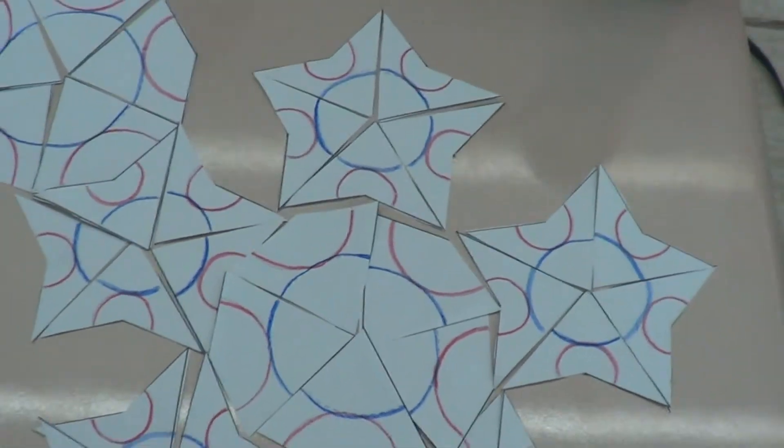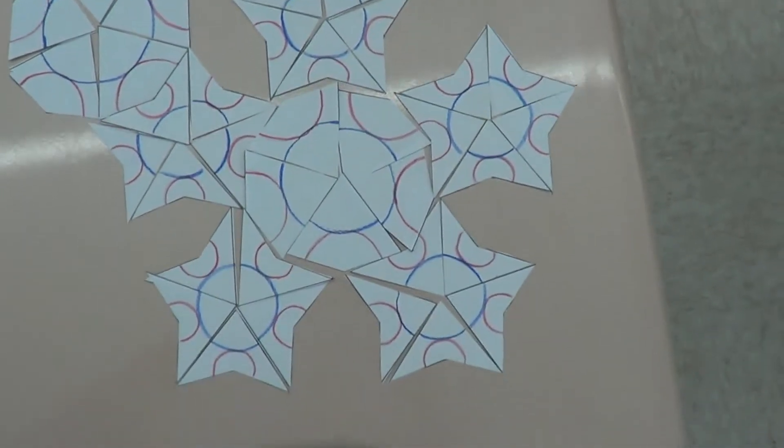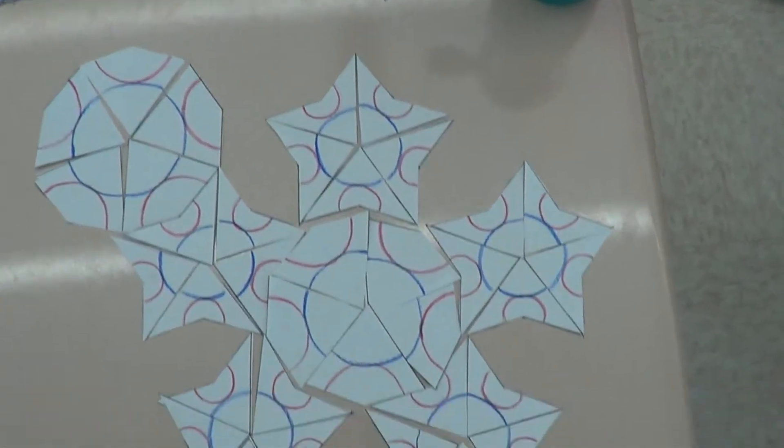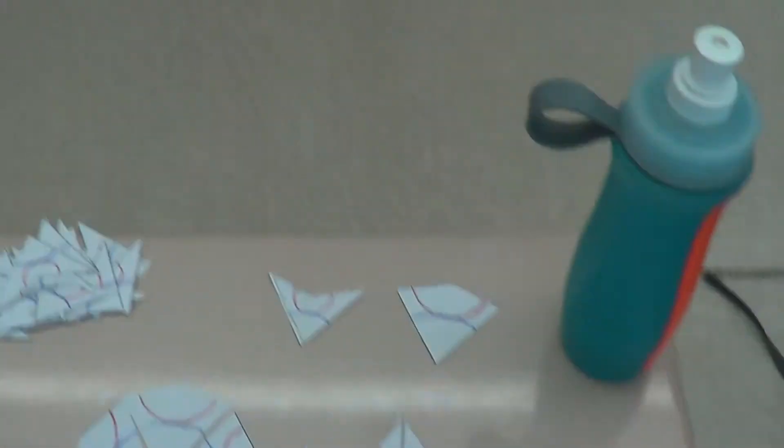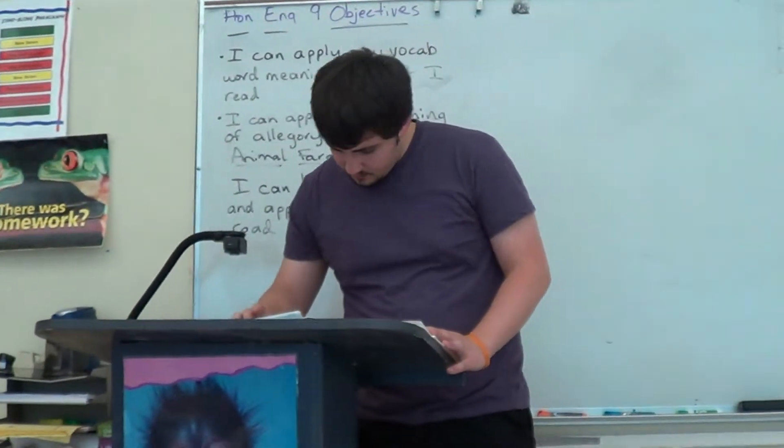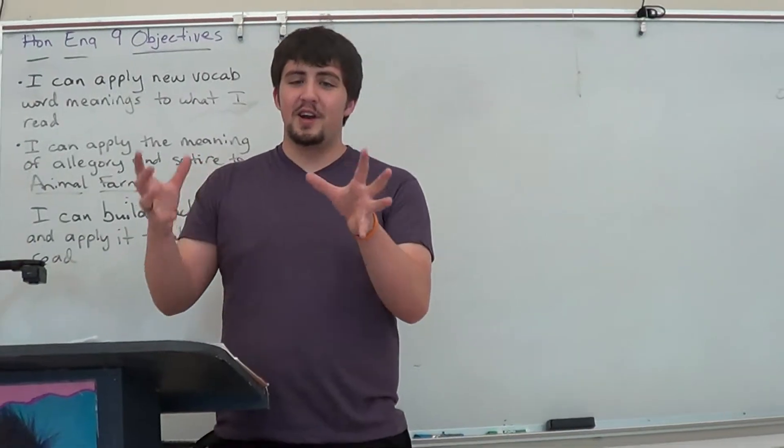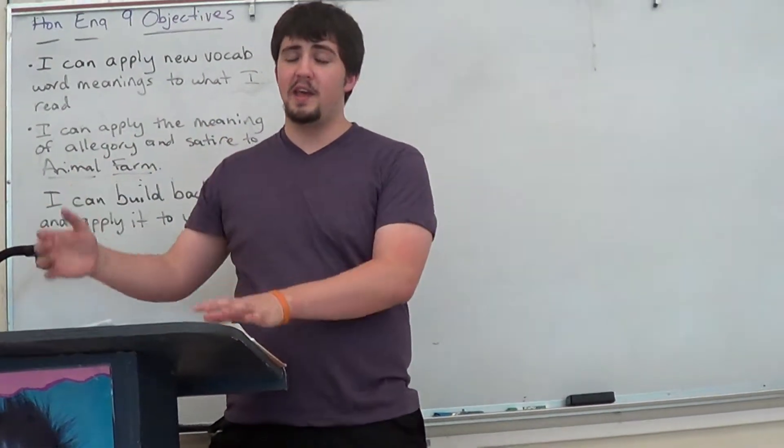Mathematicians have been able to take the first kind of non-periodic tiling, they call it, where you can't make a regular repetition of it. The first one took 20,000 different shapes to try to make this pattern so that you couldn't just overlap and do the same thing repeatedly.